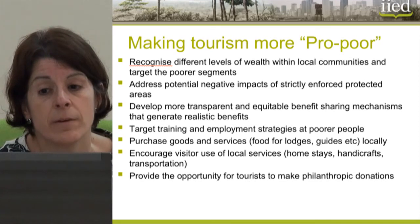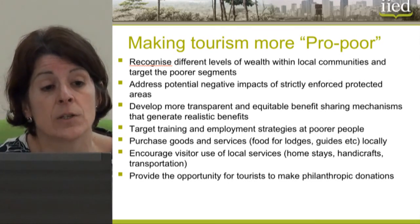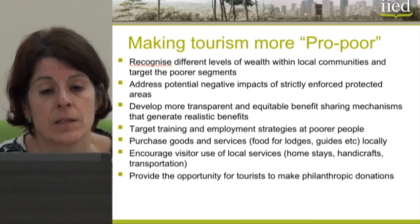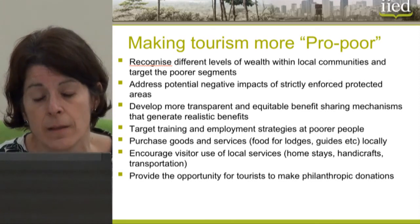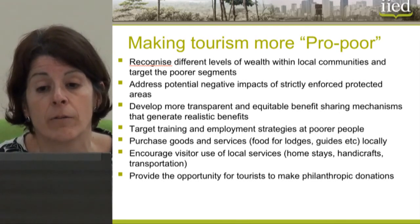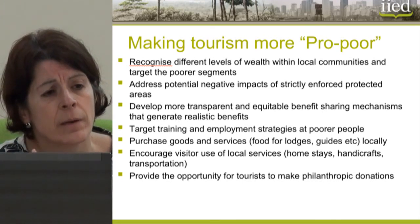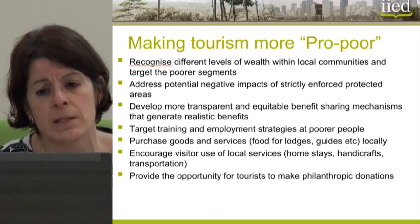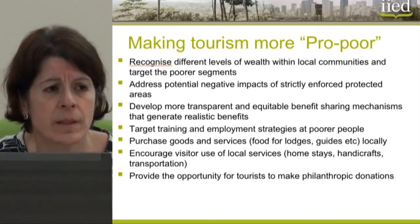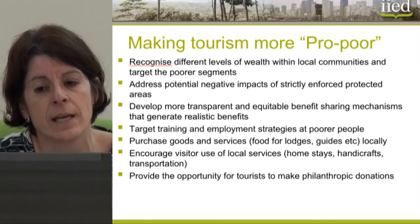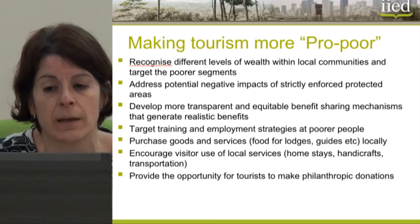The next issue is addressing the potentially negative impacts of strictly enforced protected areas, ensuring some access to resources that poor people depend on, and if it is necessary to exclude them, ensuring there is compensation for that lack of access. Another point is developing more transparent and equitable benefit-sharing mechanisms. Poor people see large amounts of money coming in through gorilla or chimpanzee tourism, and only a small amount flowing to the local community. They need to understand the huge costs associated with tourism and what realistic level of benefits they can expect.